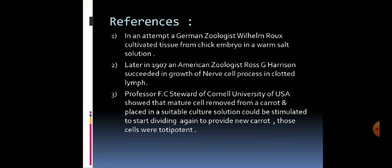The third pioneer was in botany: Professor F.C. Stuart of Cornell University showed that mature cells removed from a carrot and placed in a suitable culture solution could be stimulated to start dividing again, providing a new carrot. Those cells were described as totipotent — a concept we will come to shortly.